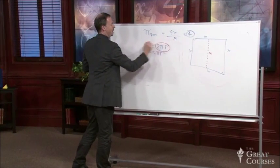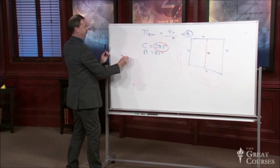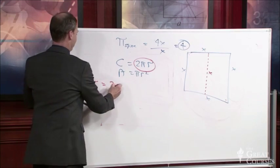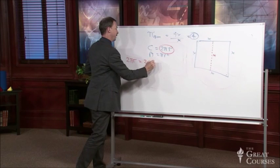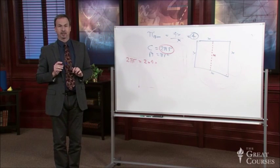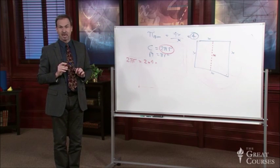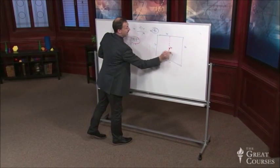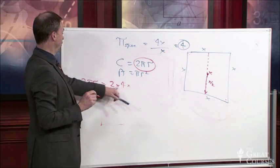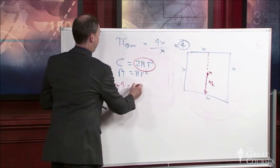I'll start with 2πr. Well, 2 I know is 2. Pi, I guess I'm saying for a square, is 4. And what do I mean by the radius? Well, I guess the radius is half the diameter. So the radius would be this length. Half of x. 2 times 4 times x over 2.